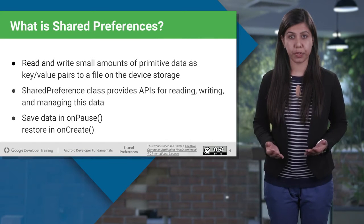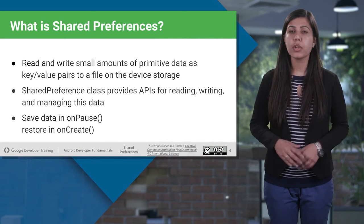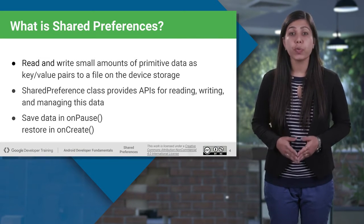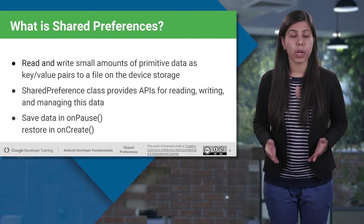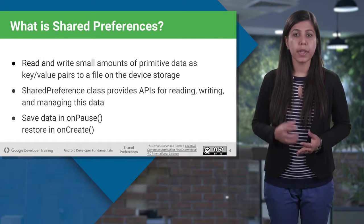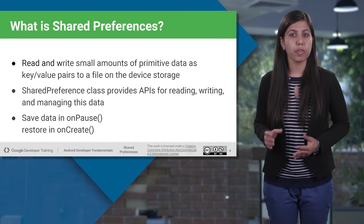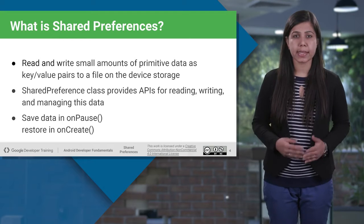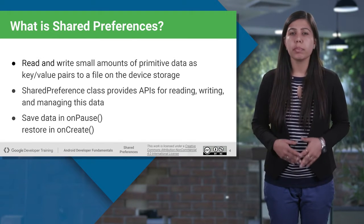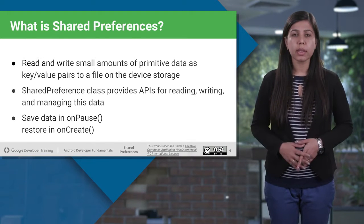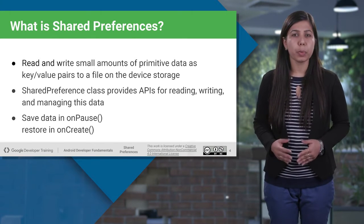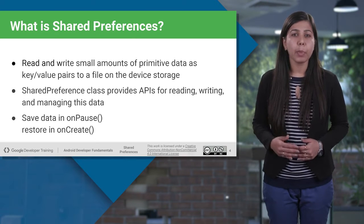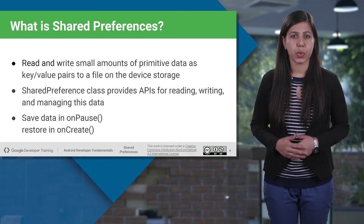What is Shared Preferences? Shared Preferences is one of the ways in which you would basically store and retrieve small pieces of primitive data types, such as string, ints, floats, and booleans, that make up your preferences in an XML file inside the app on the device storage.